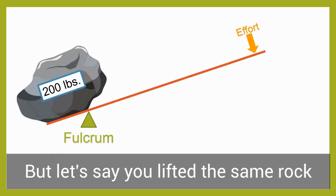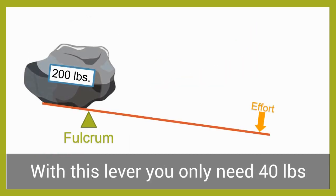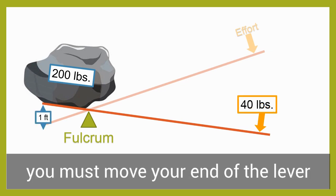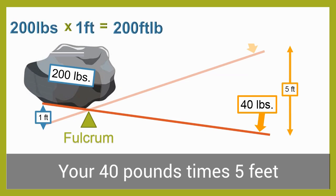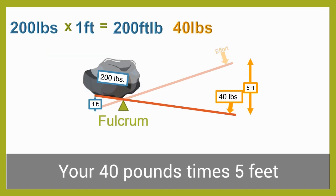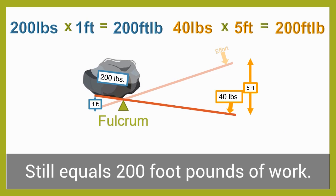But let's say you lifted the same rock one foot in the air using a lever. With this lever you only need 40 pounds of force to lift the rock, but you must move your end of the lever arm 5 feet to get the rock to rise 1 foot. Your 40 pounds times 5 feet still equals 200 foot pounds of work.